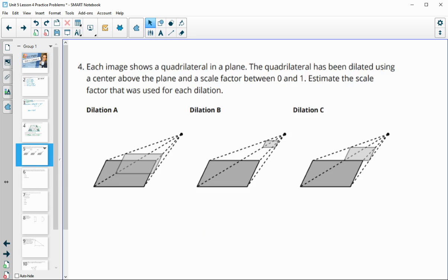Number four, each image shows a quadrilateral and a plane. The quadrilateral has been dilated using the center above the plane and a scale factor between zero and one. So estimate the scale factor that would be used. So this one looks like about halfway. This one is kind of a scale factor less than a half, so probably a fourth. And this one is between a half and one, so something like three-fourths for that one.